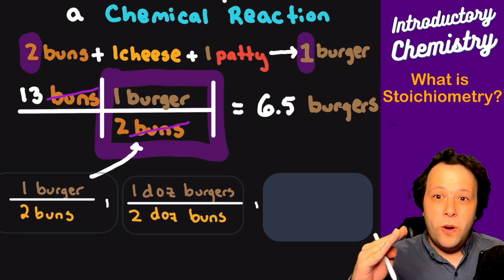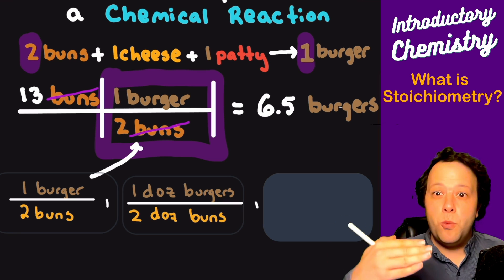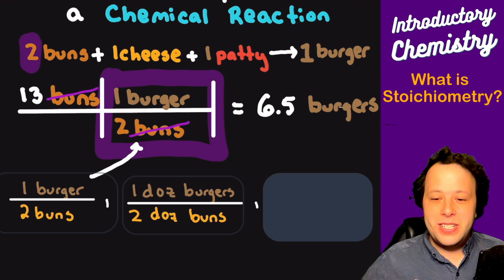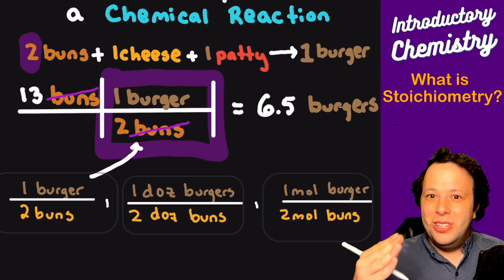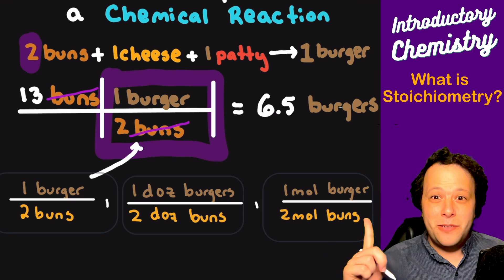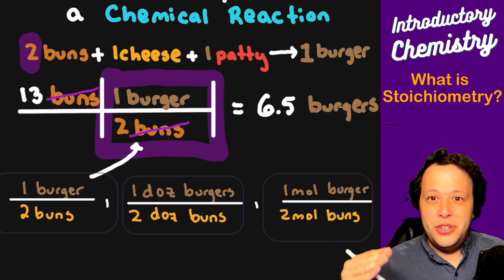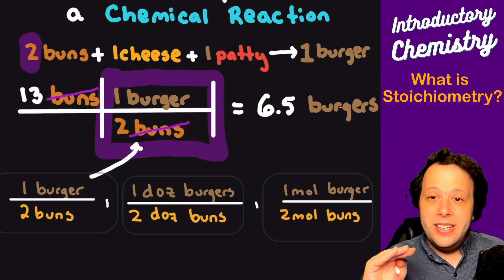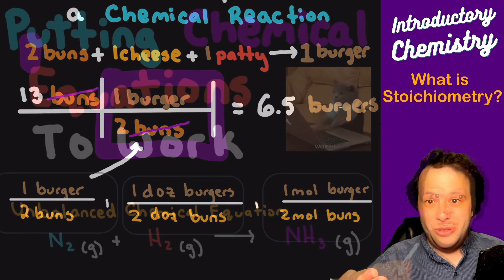For every two buns you make one burger; for every two buns you need one piece of cheese; for every two buns you need one patty — there are all kinds of relationships within the equation. And you can scale them: one dozen burgers is equivalent to two dozen buns — same one-to-two relationship. Similarly, one mole of burgers is equivalent to two moles of buns. We can use this same logic with balanced chemical equations.